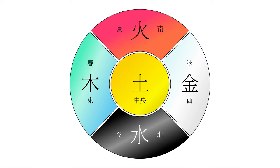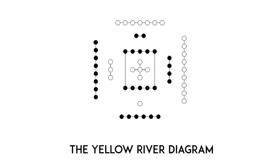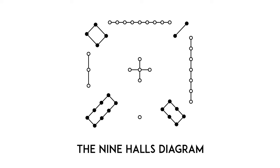If you'd like to understand the deeper meanings of the five elements, it is important to also understand the He Tu, or the Yellow River Diagram. In the future, I will make a series talking about the Yellow River Diagram and also another very important diagram known as the Luo Shu, or the Nine Halls Diagram.